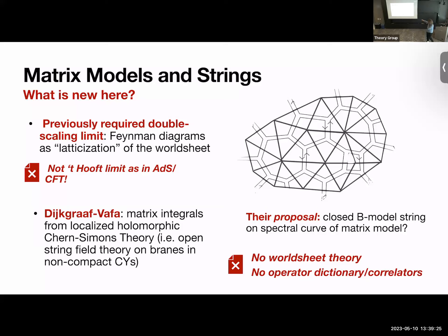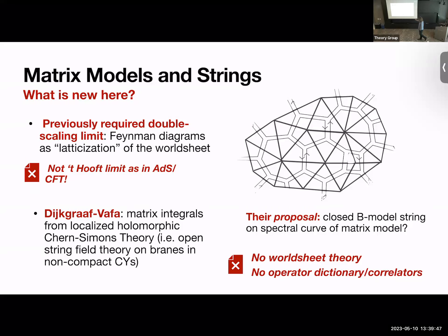These graphs could be planar or any genus — the particular power of N tells you the genus of the graph. We want to propose a different way of thinking about how Feynman diagrams realize the worldsheet. In AdS/CFT, for example, we don't do any double scaling, so somehow the Feynman diagrams of N=4 have to reconstruct the worldsheets without taking that continuum limit. We want to step away from that and just look at the standard 't Hooft limit.